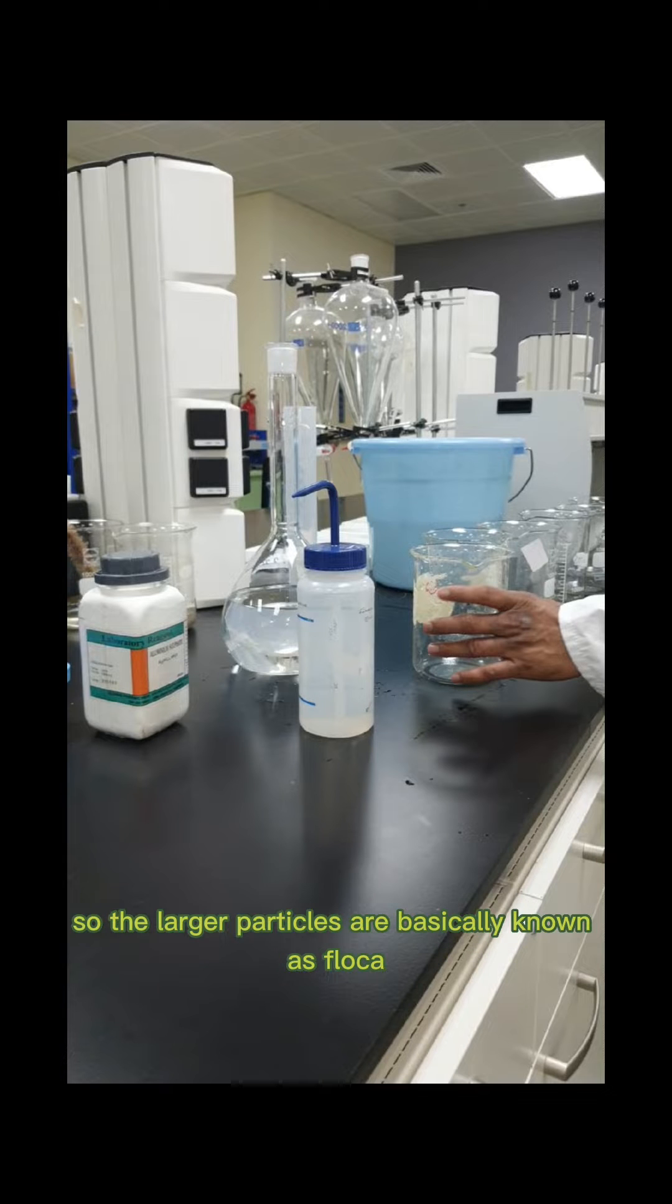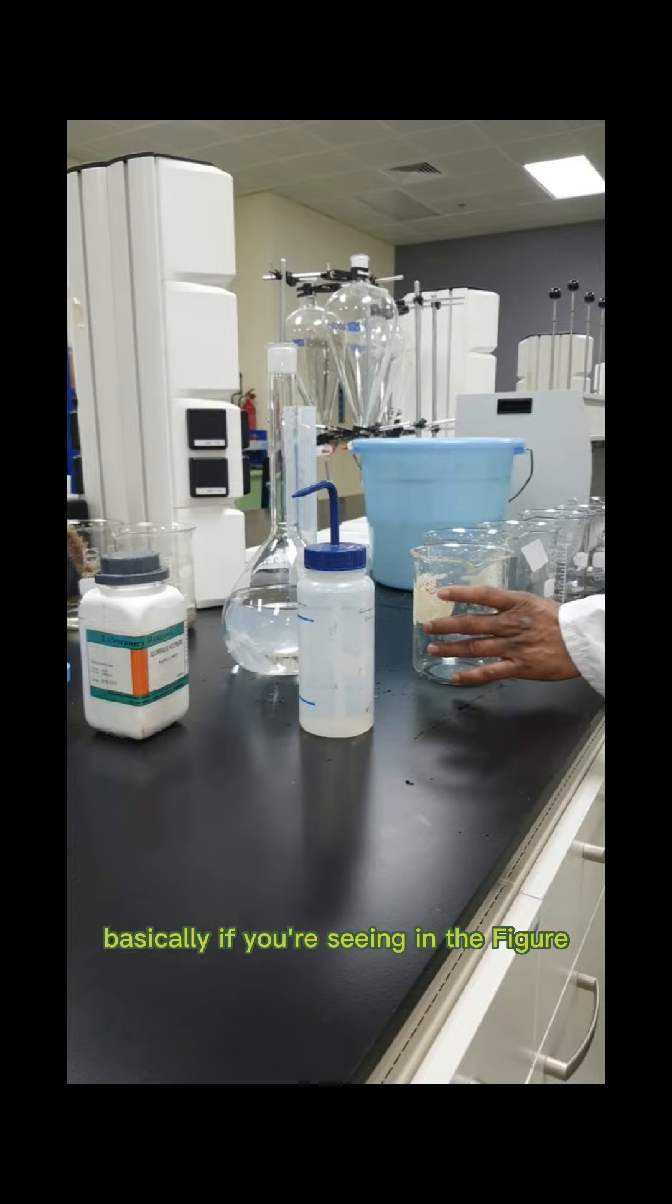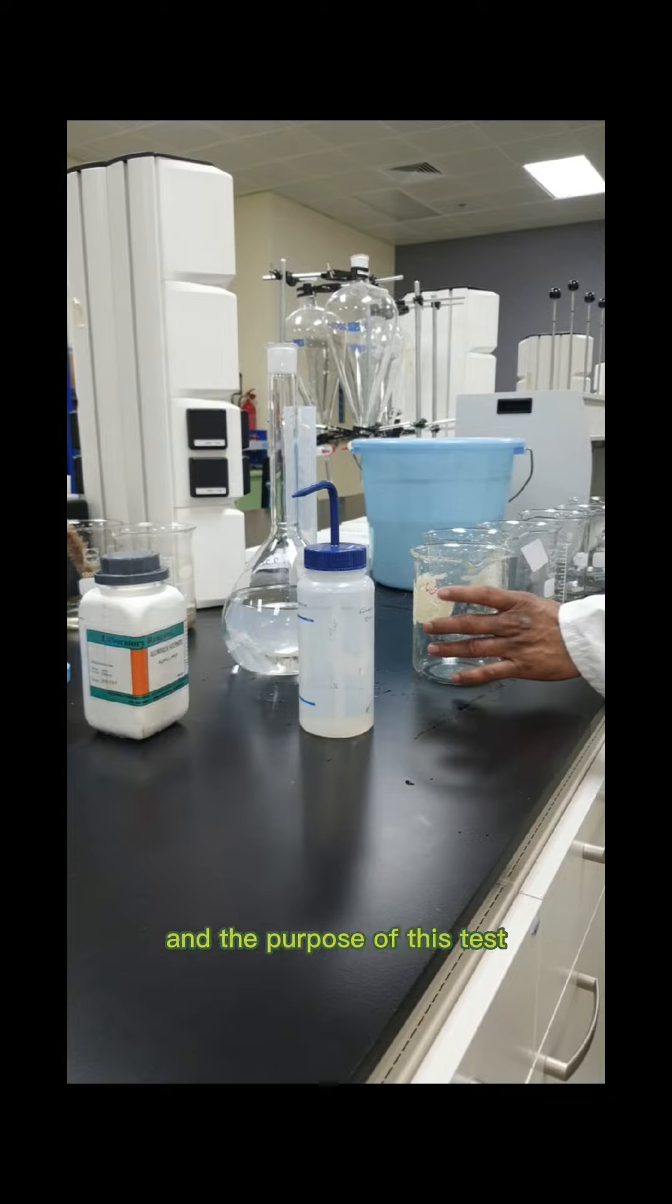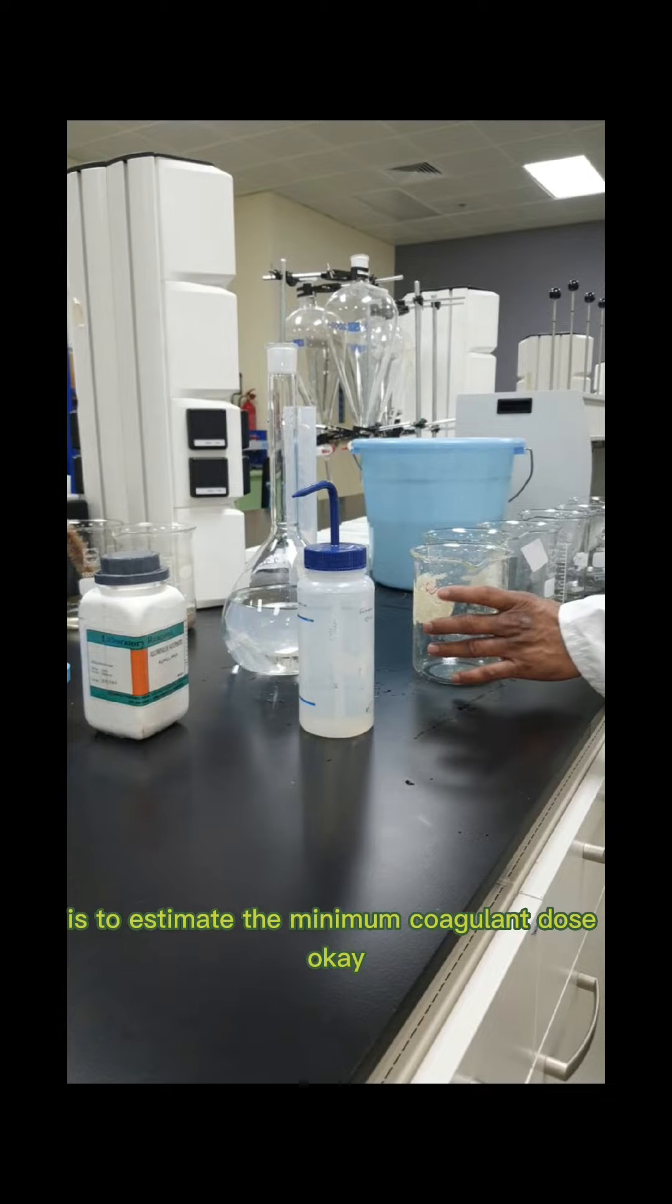The larger particles are basically known as flocs, and the jar test is a bench-scale laboratory test that simulates coagulation or flocculation with different chemical doses. In terms of chemical doses, we not only use aluminum sulfate; we have other coagulants in the market such as ferric chloride and ferric sulfate, and these coagulants are operative at different pH ranges.